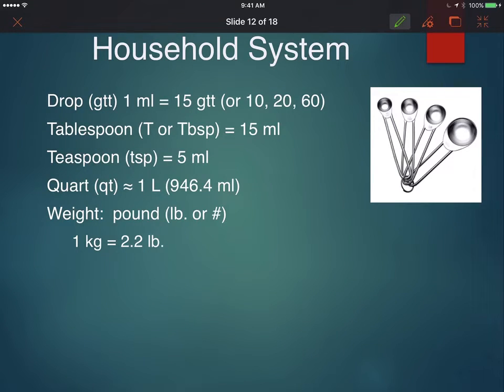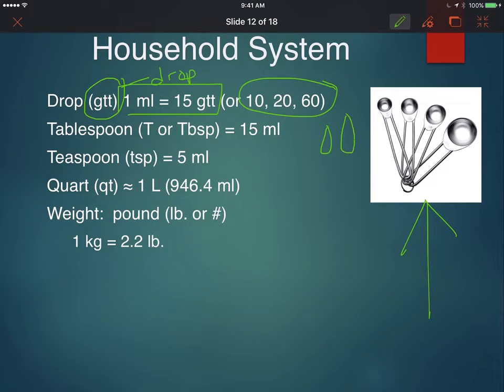The third system of measurement is called the household system. I have some measuring spoons here because anybody who's worked in the kitchen has used the household system. The drop, which is abbreviated GTT, you're going to use this all the time when we're doing fluid drip rates. One mil has 15 standard size drops in it, but we have different size fluid administration sets which are calibrated to different drop sizes. The teaspoon and the tablespoon are very commonly used measurements. A tablespoon is equal to 15 mils and a teaspoon is equal to five mils.